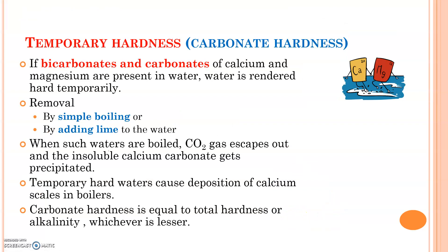We call this hardness temporary because we can remove it easily with simpler techniques or treatments. These bicarbonates and carbonates of calcium and magnesium can be removed by simple boiling or by adding lime. When we boil this hard water, a reaction occurs, carbon dioxide escapes out, and what is left is water and some insoluble calcium carbonate. Since calcium carbonate is insoluble, it forms as precipitates which can be easily removed.